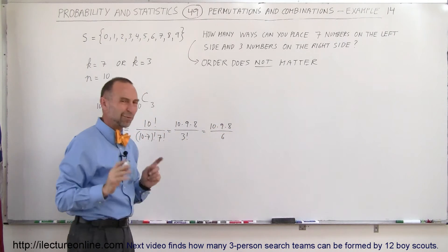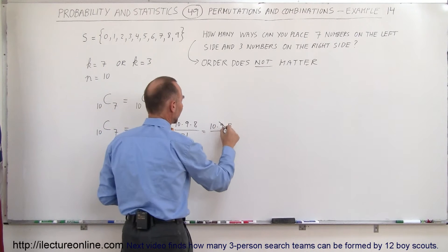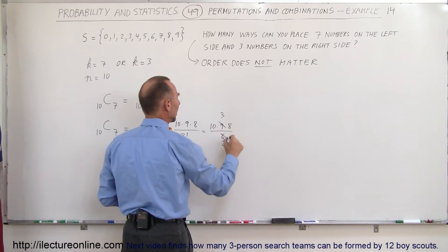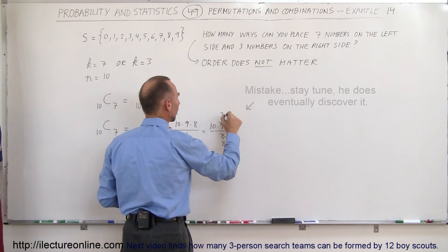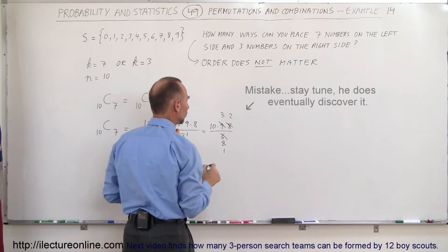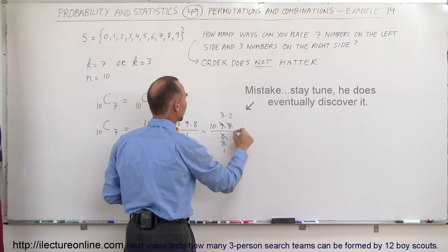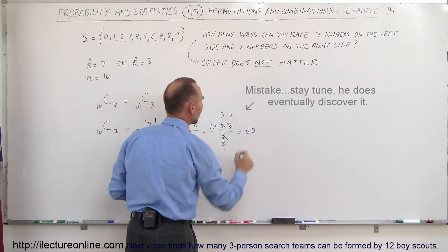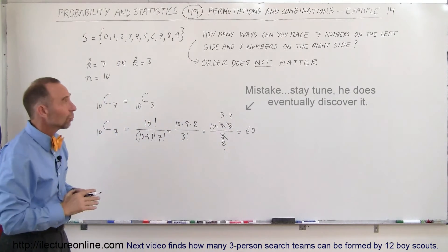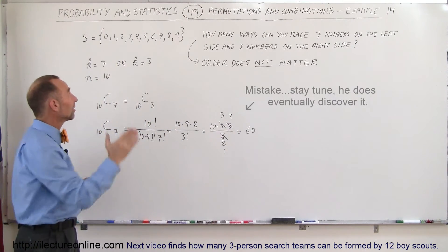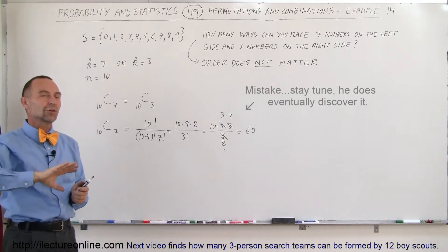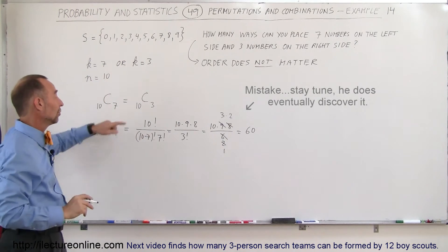We can simplify further: 9 and 3 are divisible by 3, giving 3 and 2; and 8 and 2 can be divided by 2. This simplifies to 6 times 10, which is 60. So there are 60 different ways to take 7 of those numbers and place them on one side, and 3 on the other.